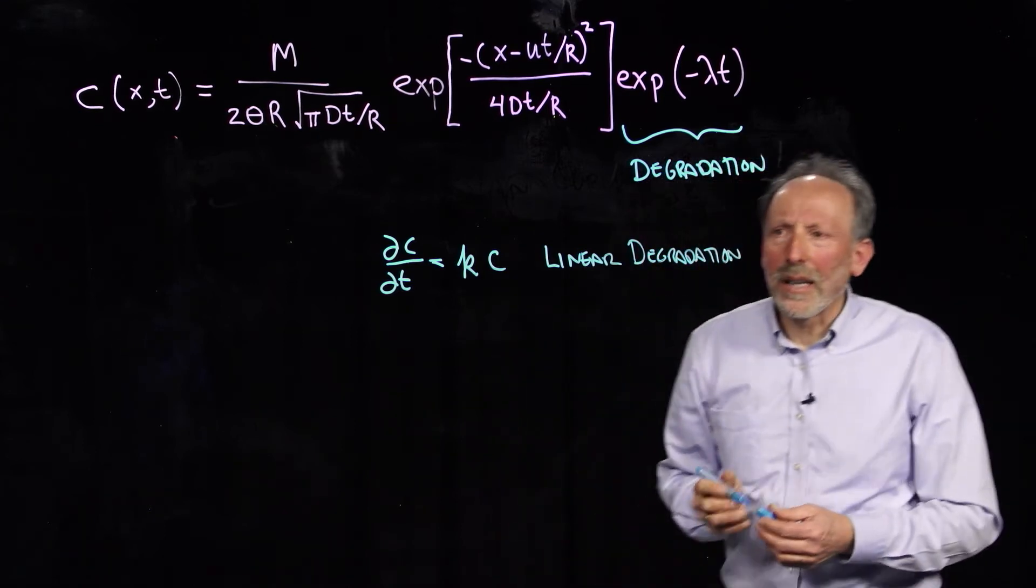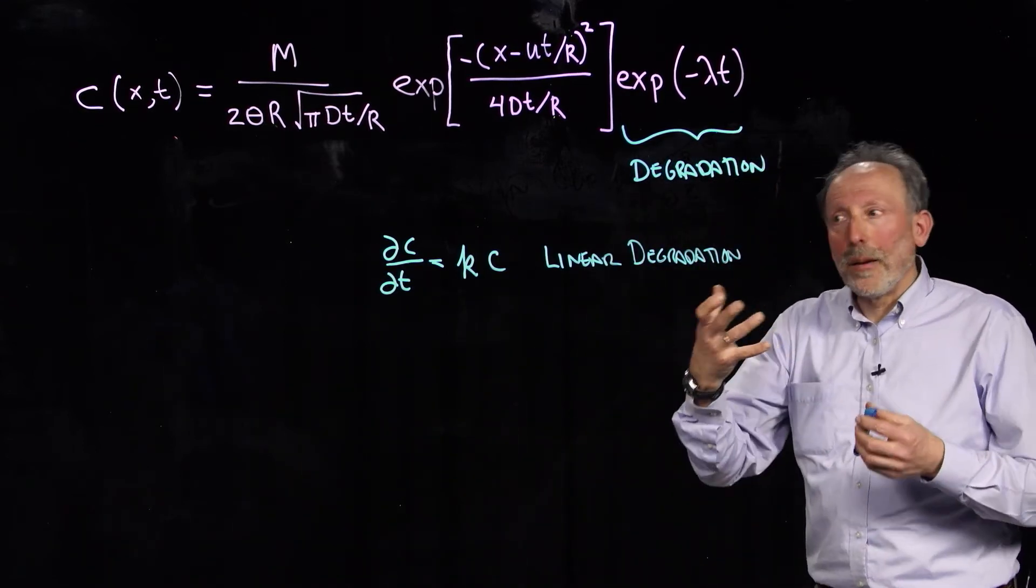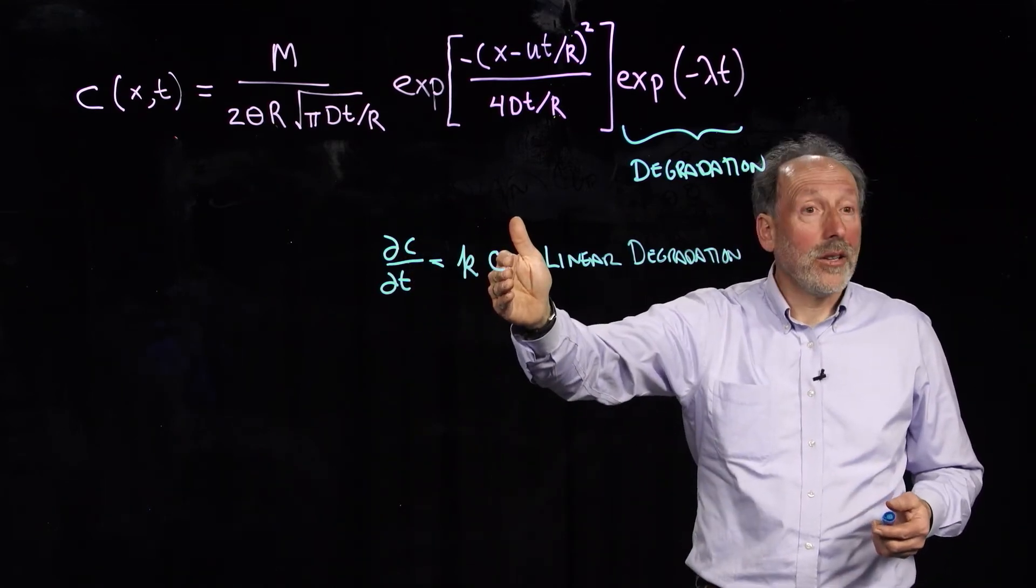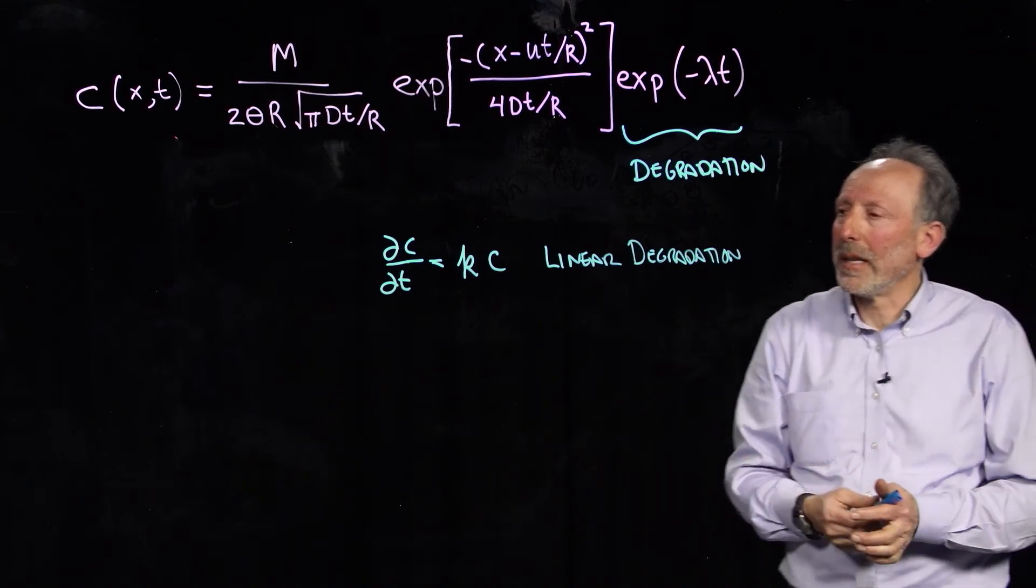And you may recognize this from radioactive decay, for example. Radioactive decay, the amount of decay is proportional to the amount of radiation. So, it's always losing a constant fraction of its mass in a given amount of time.